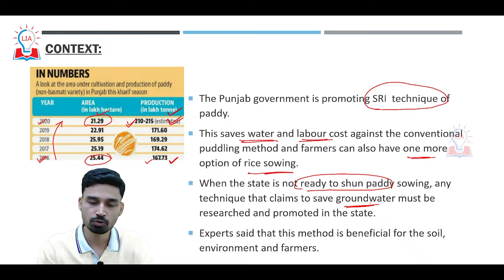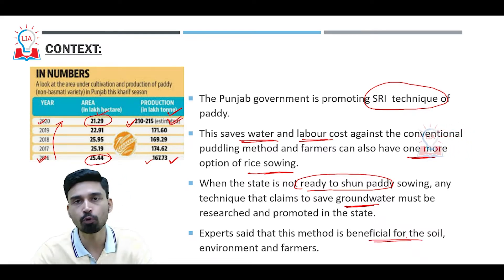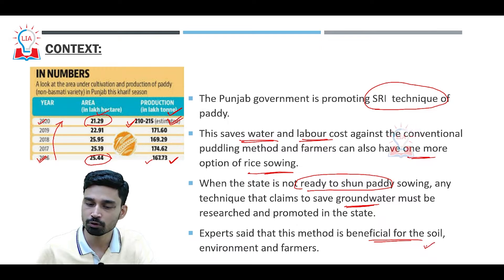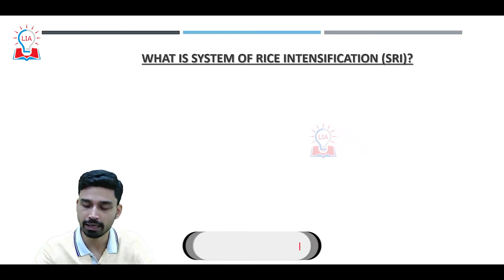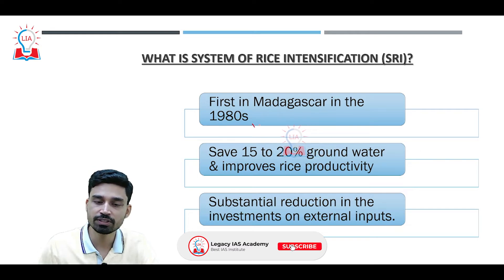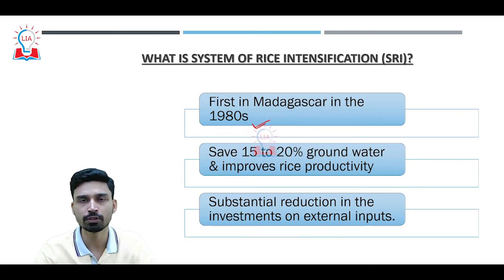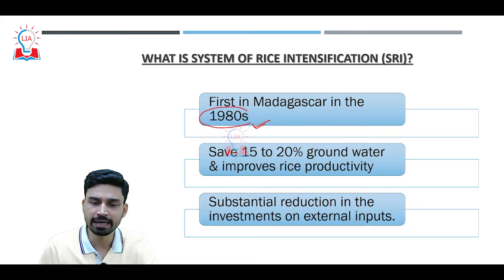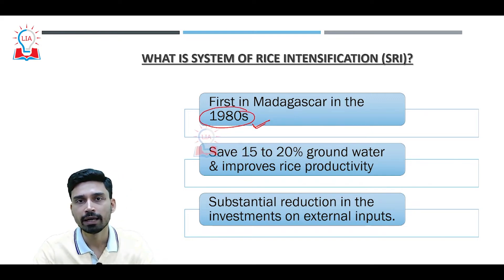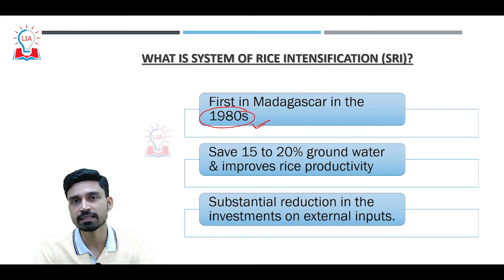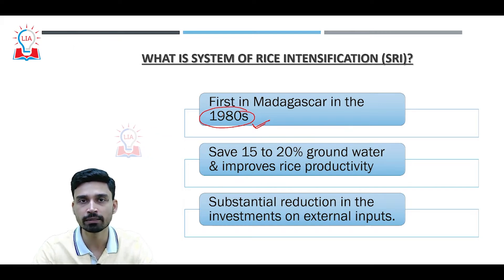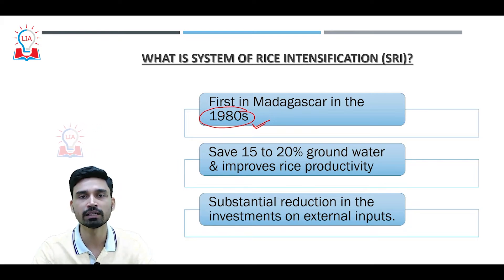Experts believe this method is not only beneficial for saving water but also for the soil, environment, and farmers. The System of Rice Intensification was first used in the island of Madagascar, off the coast of Africa, in the 1980s. Once successful, it spread and was adopted by many countries, especially in South and Southeast Asia. In India, several states like Telangana and Andhra Pradesh are already using this method.